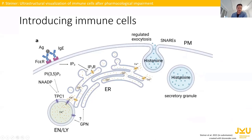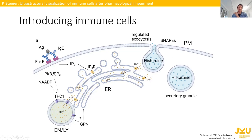If we have an allergy exposition, for example, this triggers a signal cascade. The signal cascade therefore triggers the release of calcium out of the endoplasmic reticulum, which is very essential for the calcium homeostasis inside the cell. This provokes histamine release out of the cell, which again triggers a regulated anaphylactic response.